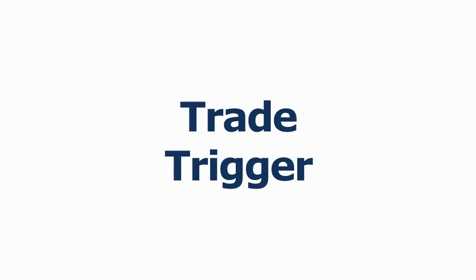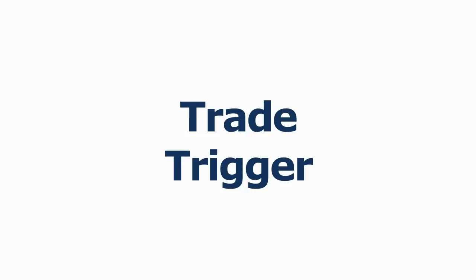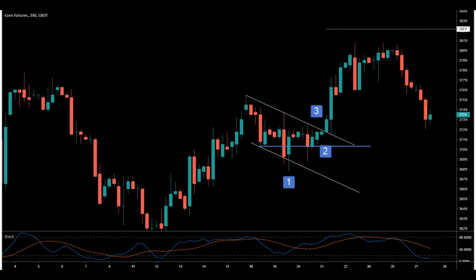We have to find a way to get into the trade, so a trade trigger: you could jump into a trade when price action appears to be stalling during the pullback, though that is a little subjective. There are several methods you can use, including a trend line break, lower timeframe structures, buying breaks of highs, or selling new lows. You can also use the hook of the indicator as well.